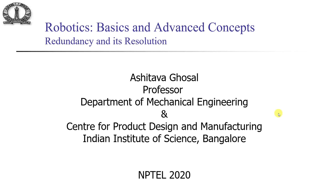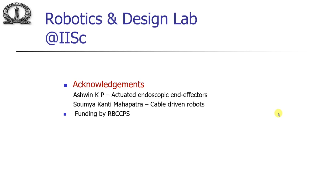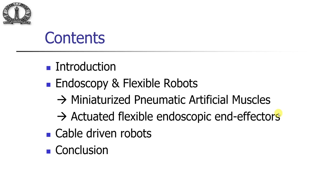Welcome to this NPTEL lecture on robotics basics and advanced concepts. This week we are looking at redundancy in robots and how to resolve it. In the last two lectures we looked at hyper-redundant robots and the human arm. In this lecture we will look at a flexible robot which is made to be extremely redundant. Quick acknowledgement: this is the work of Ashwin and Swamiyakanti Mahapatra, students in our robotics lab, with funding from the Robert Bosch Centre for Cyber Physical Systems.